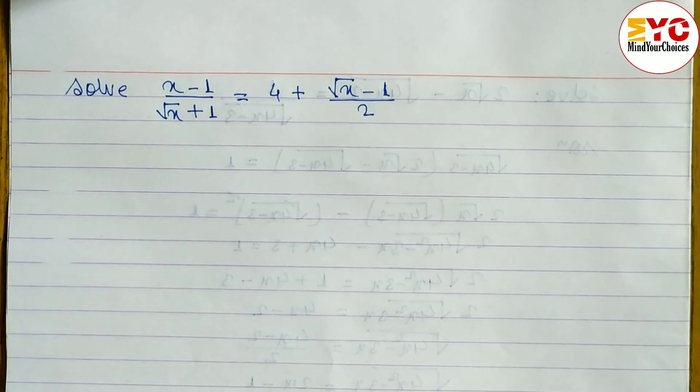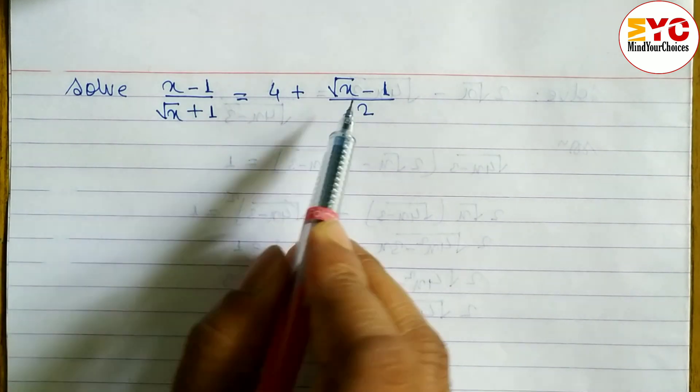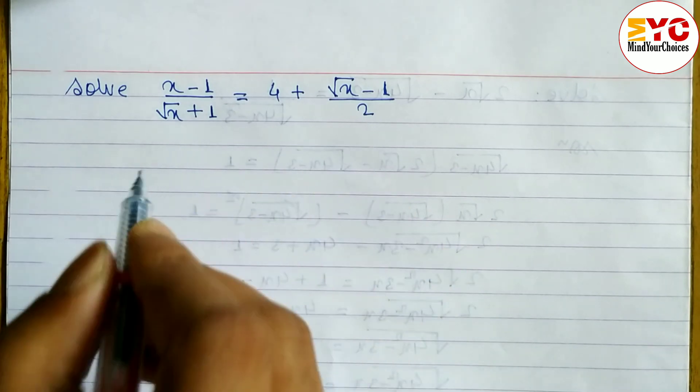This question is taken from Radicals and Surds from Algebra and is frequently repeated in SSC. The question is: (x - 1)/√(x + 1) = 4 + √(x - 1)/2.